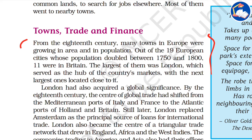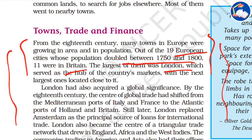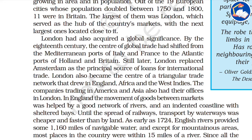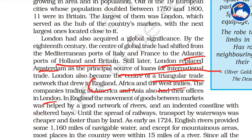From the early 18th century, many towns in Europe were growing in area and population. Of the 19 European cities whose population doubled between 1750 and 1800, 11 were in Britain. The largest was London, which became a global banking center. By the 18th century, the center of global trade had shifted from the Mediterranean ports of Italy and France to the Atlantic ports of Holland and Britain, and London replaced Amsterdam as the principal source of loans for international trade. London also became the center of a triangular trade network drawing in England, Africa, and the West Indies, with companies trading in America and Asia also having offices there.